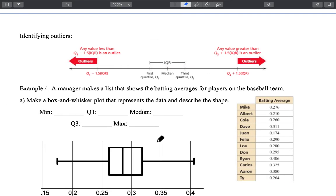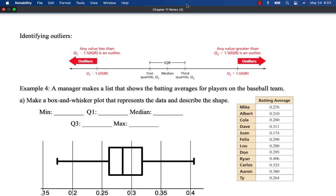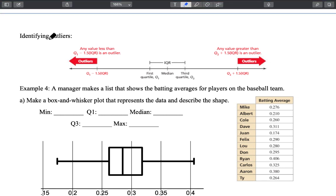So turn to your notes. There is a page that we skipped over and that page starts off by saying identifying outliers.